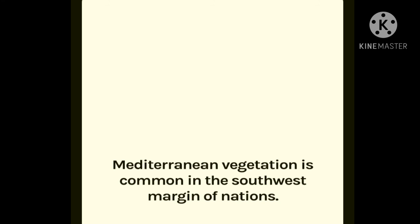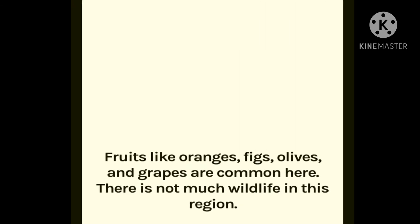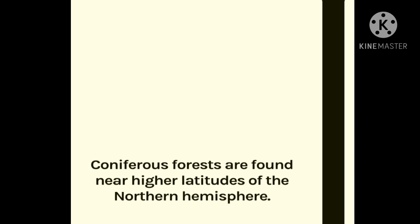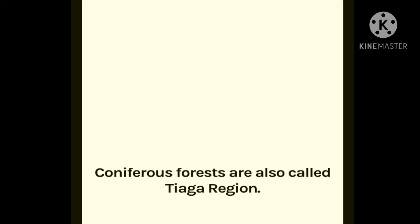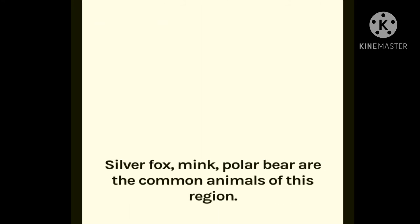Let us revise those points. Mediterranean vegetation is common in the southwest margins of continents, mostly found around the Mediterranean Sea. Fruits like oranges, figs, olives and grapes are common here, but there is not much wildlife in this region. Coniferous forests, also called the taiga region, are found near the higher latitudes of the northern hemisphere. Pine, cedar and chir are the common trees, and their soft wood is used to make matchboxes and packing boxes. Silver fox, mink and polar bear are the common animals.